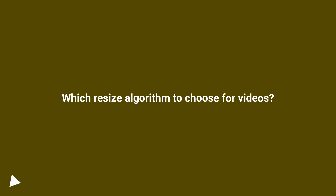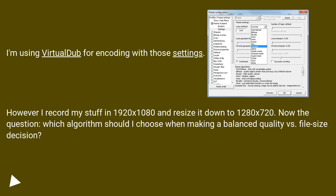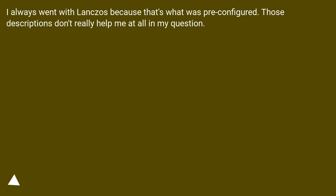Which resize algorithm to choose for videos? I record my stuff in 1920 by 1080 and resize it down to 1280 by 720. The question is: which algorithm should I choose when making a balanced quality versus file size decision? I always went with Lanczos because that's what was preconfigured, but those descriptions don't really help me at all in my question.